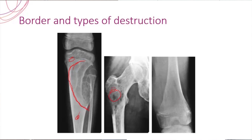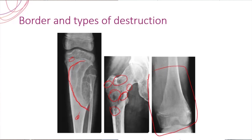Here you could see multiple moth-eaten-like appearances, and these show that this may not be benign — the possibility of being malignant is quite high. And if you look into this area, there is something pathological running but you cannot say exactly where it is all happening. Approximately, things are going wrong somewhere in the metaphysis, but you cannot delineate the tumor very clearly. So this is what is called a permeative border — the third type, where the chance of being malignant is very high.